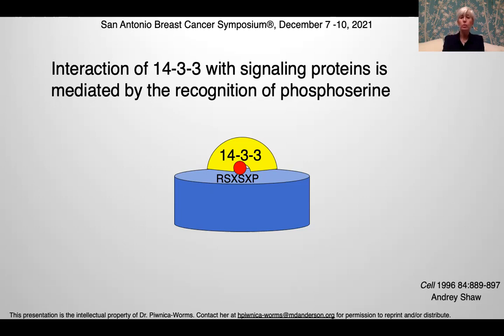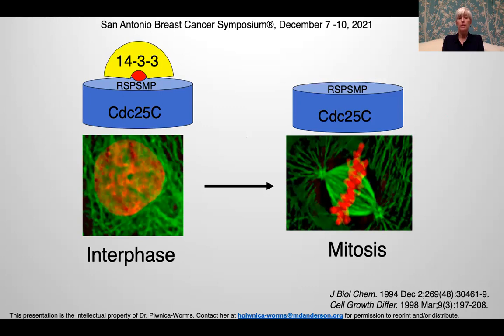Literally within three days, we had done an experiment to show that during interphase, CDC25C was bound to 14-3-3 proteins due to this phosphorylation, and in mitosis this interaction was lost. We then went back to the yeast literature and read that 14-3-3 proteins in fission yeast are RAD nutrients, so now we knew what experiments we had to do to test the function of this phosphorylation and 14-3-3 interaction.